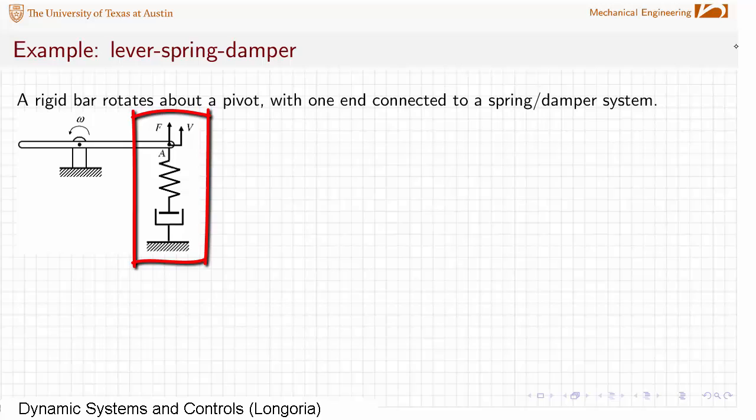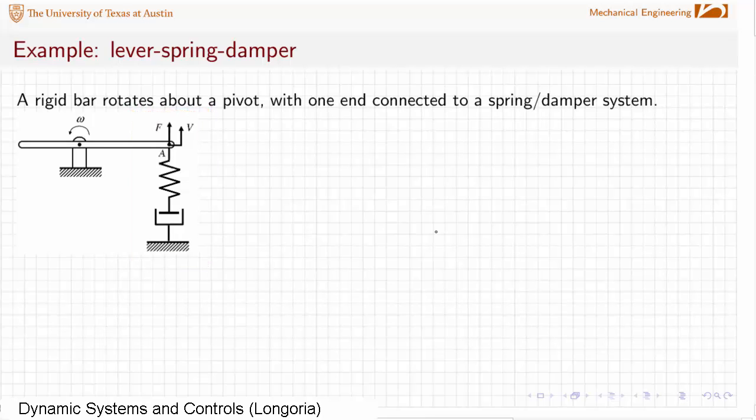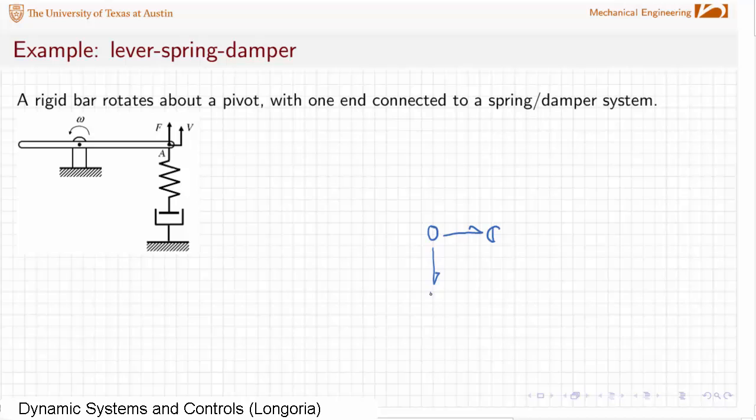So we've already drawn bond graphs before for this system here. Remember in this case we've got a spring and damper that have a common force, right? So we know when we connect these two we need to have a zero that connects the spring to the damper.